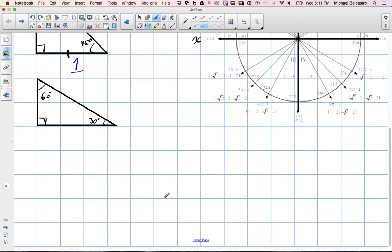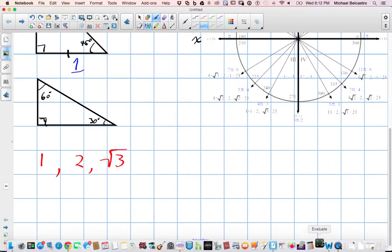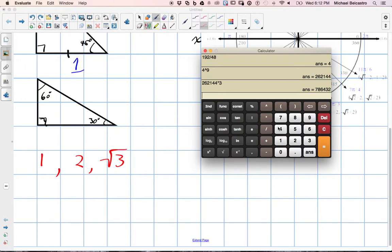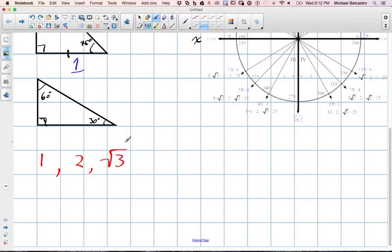So assuming we don't have this memorized, we have 1, 2, and root 3. Which of these is the largest? Root 3. Let's find out what root 3 is. Root 3 is 1.73. So I didn't actually write it in the order. That leaves us with number 2 being the largest. So the hypotenuse is always opposite of the 90. Therefore, this must be the side that's 2.